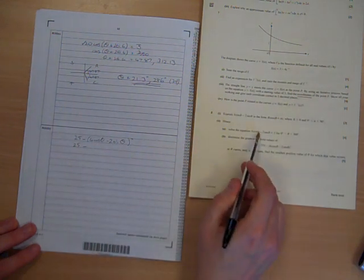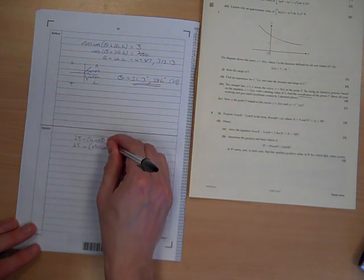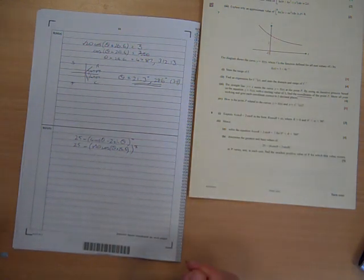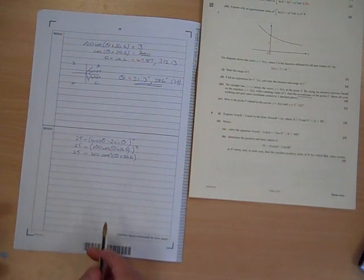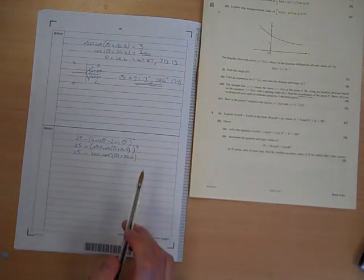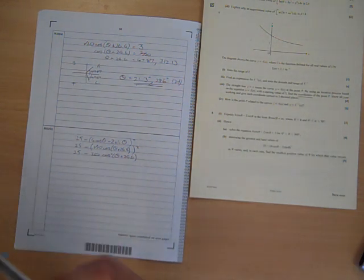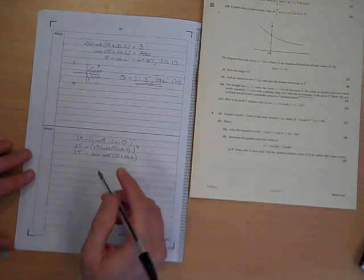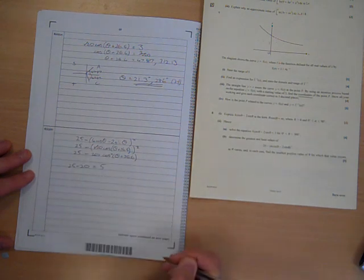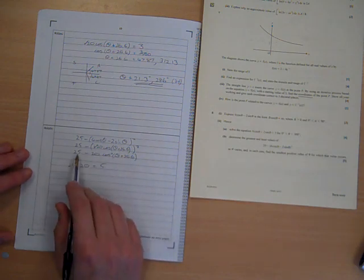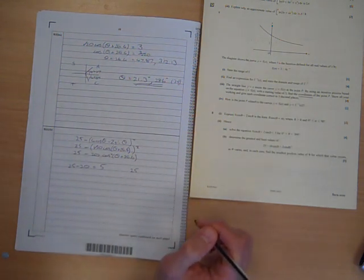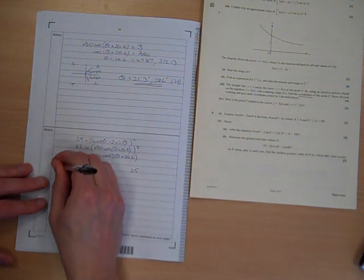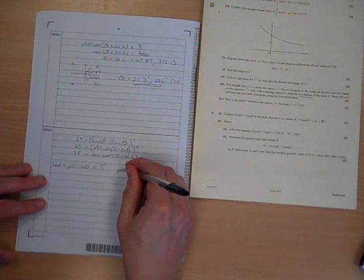This is 25 minus this is our thing that we've been working out all the way along. So root 20 cos theta plus 26.6 squared. So that is 25 minus 20 times cos squared theta plus 26.6. Now, the crucial thing here is cos theta varies between minus 1 and plus 1. But cos squared theta varies between 0 and plus 1. Because if it's negative, you'd be squaring it and become positive. So when that is equal to 0, we have 25 minus 20, which is 5. Sorry. When that is equal to 1, we have 25 minus 20, which is that. When that is equal to 0, we have 25 minus 0. We have nothing, which is that. So our least value is 5. Our greatest is 25.